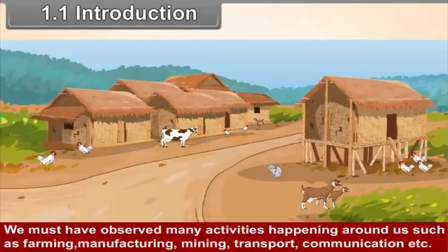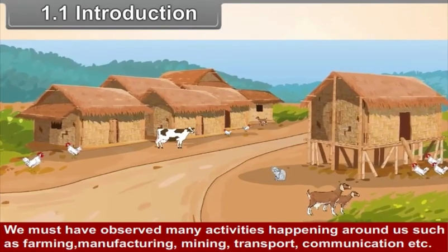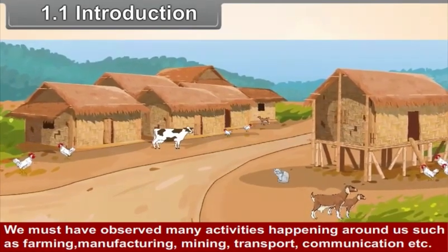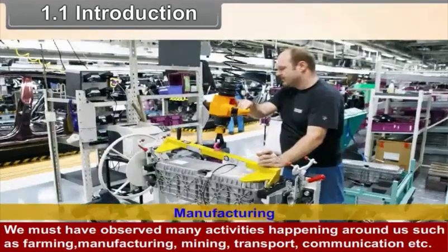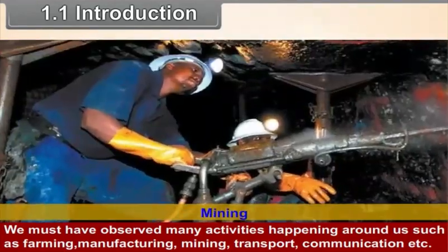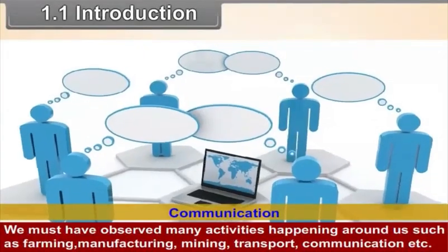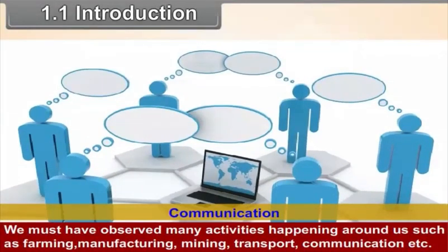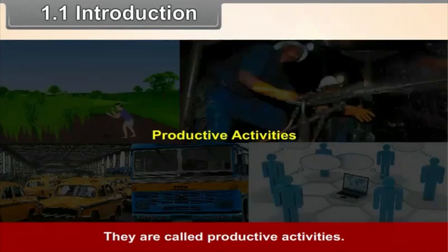1.1 Introduction. We must have observed many activities happening around us such as farming, manufacturing, mining, transport, communication, etc. These are called productive activities.